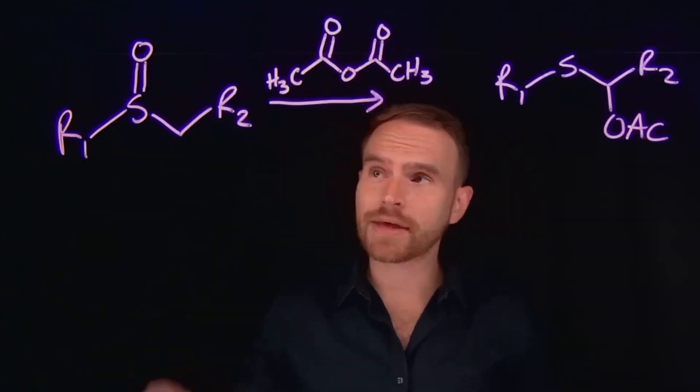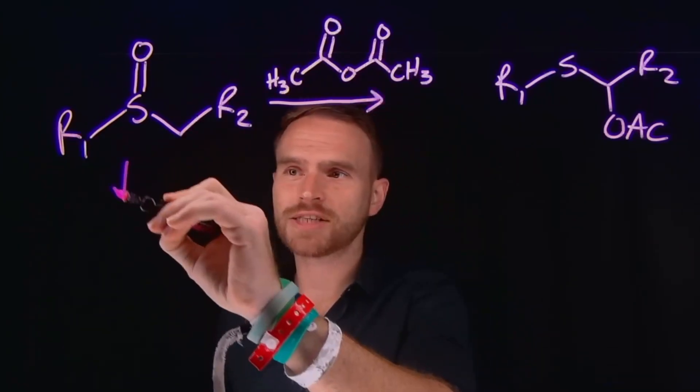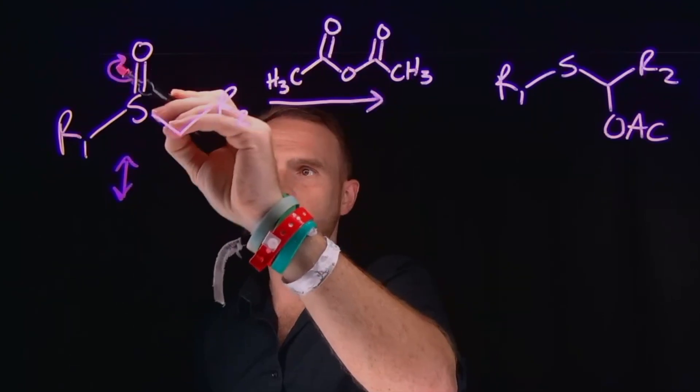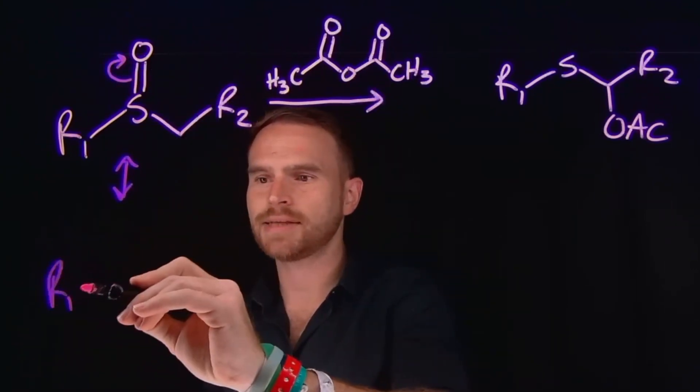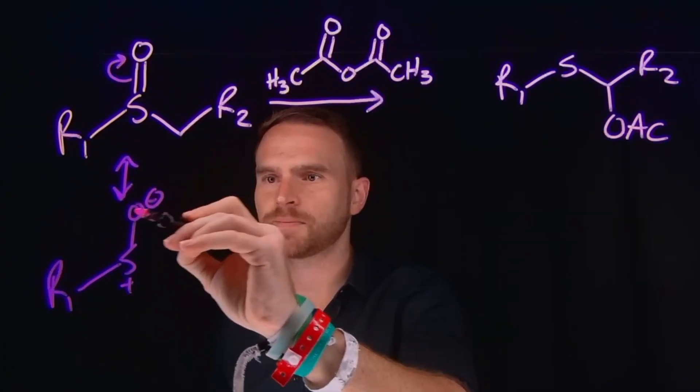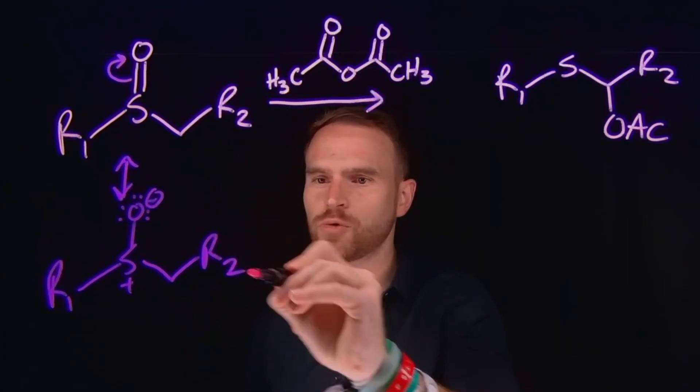Importantly, we can also draw a resonance structure where we actually shift these electrons in this pi bond to the oxygen. And this is thus going to create a positively charged sulfur at this position, and a negatively charged oxygen at this position, which will now have three lone pairs of electrons. And then the rest of the molecule will remain the same.